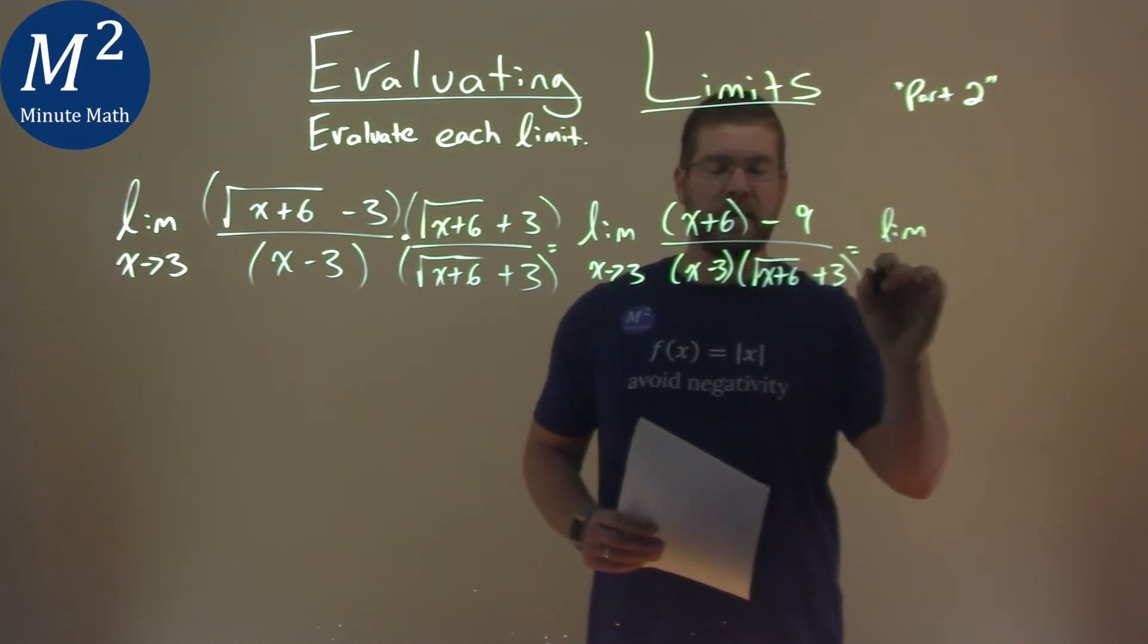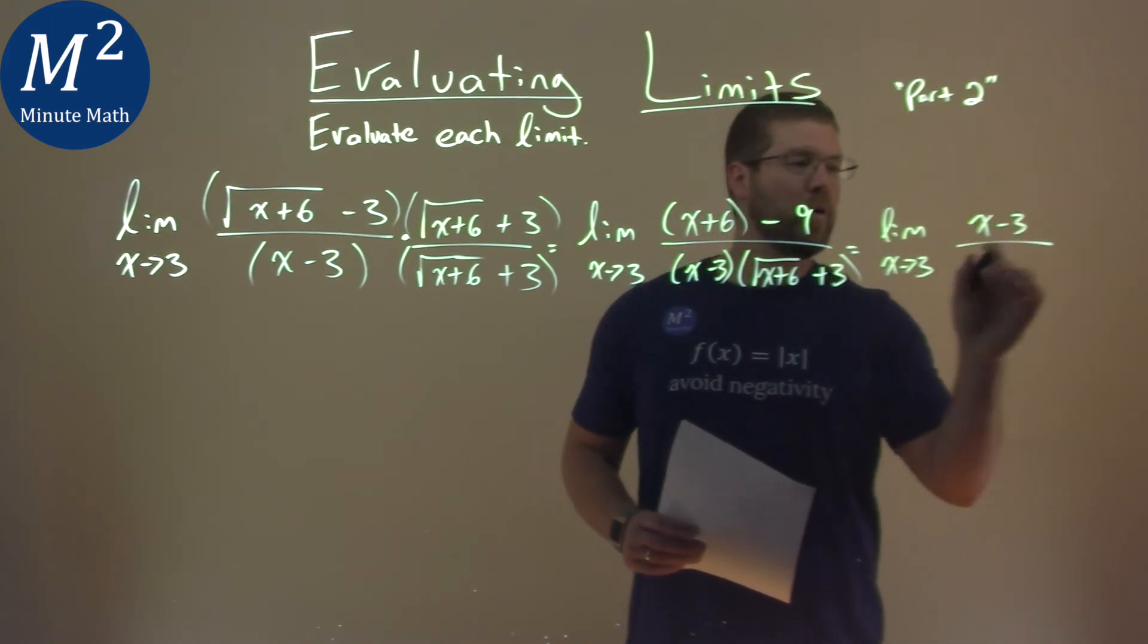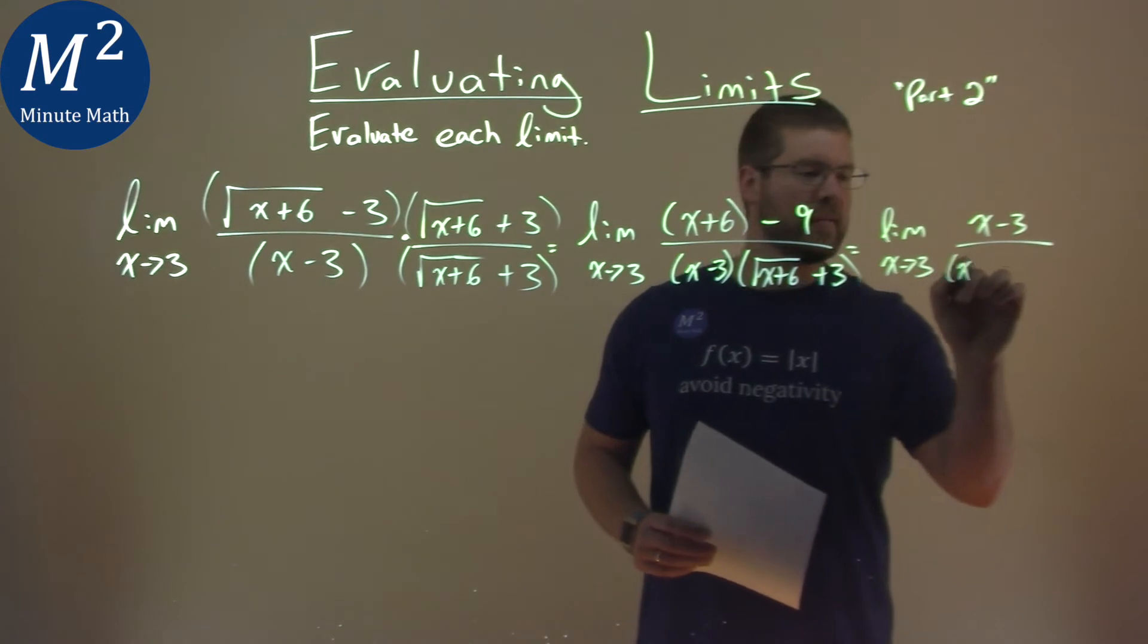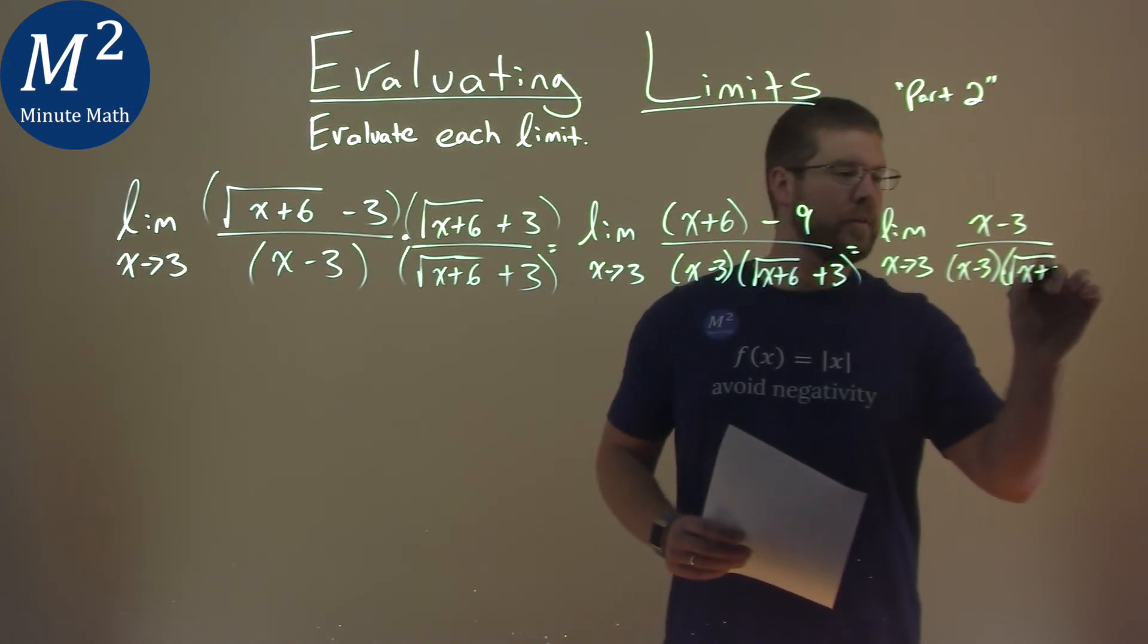So we have the limit as x approaches 3 of x minus 3 over x minus 3 times the square root of x plus 6 plus 3.